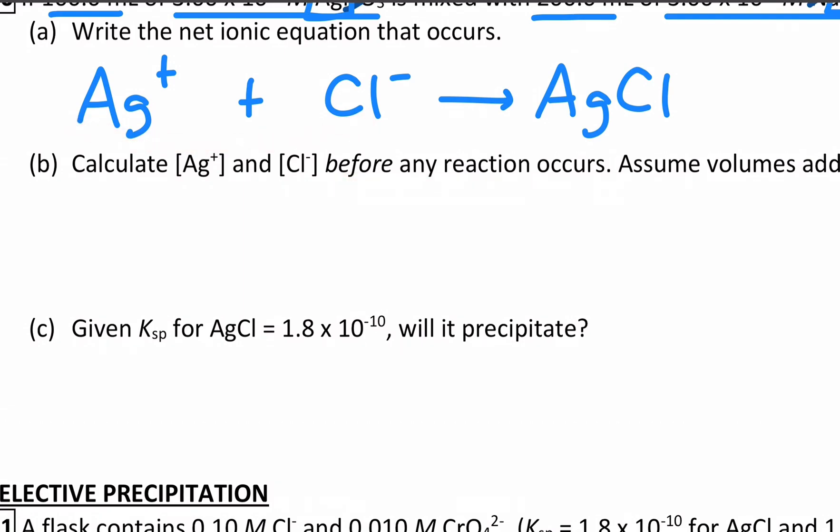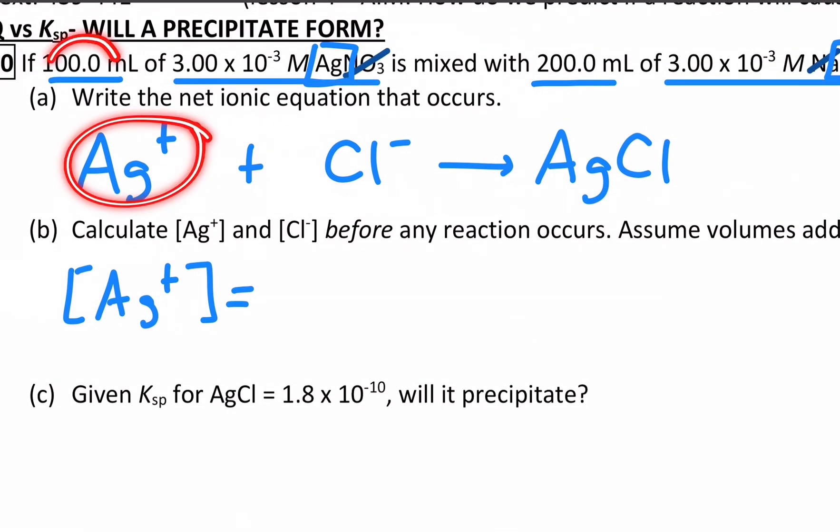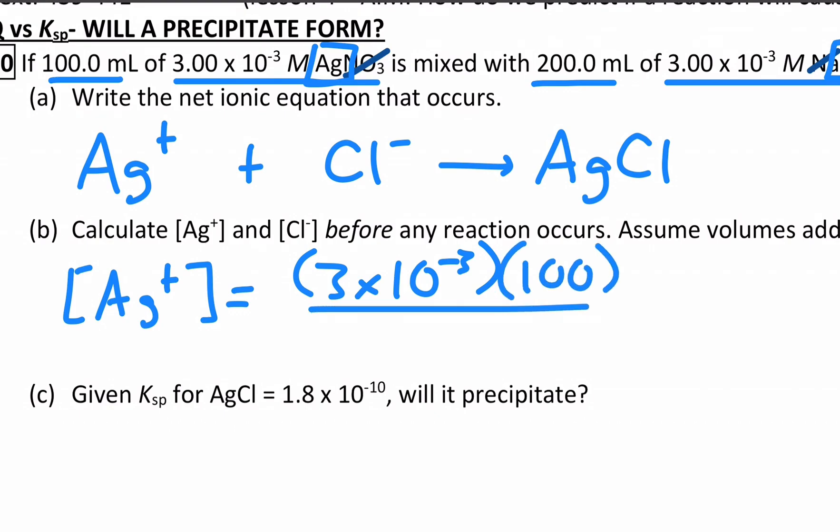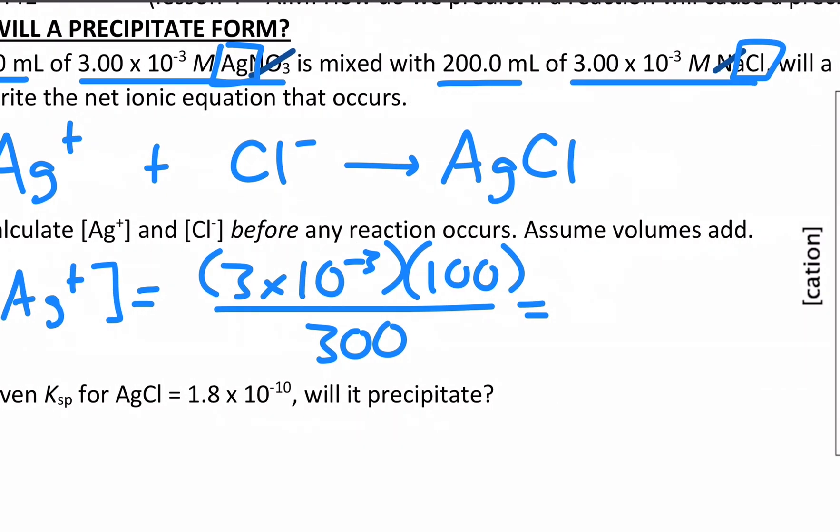So the silver ion concentration, just modifying the dilution equation, is going to be how many moles of silver ion we have divided by the total volume, assuming volumes are additive, which in this low concentration, they should be. So the molarity is 3 times 10 to the negative 3 from up above. The volume is 100, and we are diluting it to 300. That 300 is the sum of the two volumes once they've been added. And without a calculator, that just gives us 10 to the negative 3 molar of the Ag plus ion.